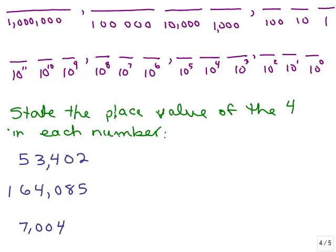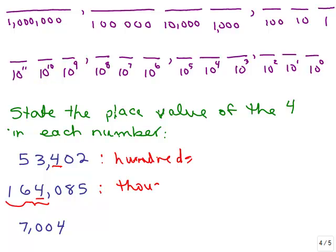Okay, so for the first number — counting 1, 10, hundreds — the 4 is in the hundreds place. For the next number — counting 1, 10, a hundred, thousand — the 4 is in the thousands place, because it's the first position in the thousands grouping.